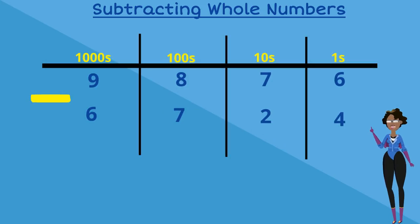Six take away four is equal to two, so we put two in our total space in our ones column. Now we move on to our tens column where we have seven subtract two, which is equal to five, so we put five in our total space in our tens column.